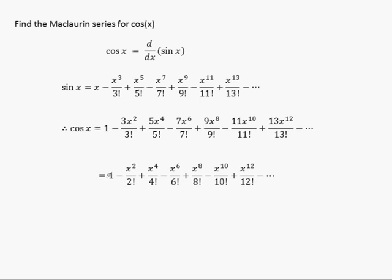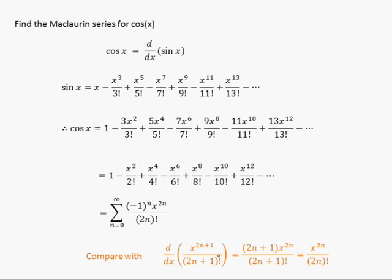Writing it in sigma notation, we've got all the even terms and we start with one instead of x. Starting with n equals zero, x to the zero is one, negative one to the zero is one, and zero factorial is one, so the first term is one. Putting in n equals one, two, three, four, we get the even powers, the even factorials, and the sign alternates positive, negative, positive, negative. You could also verify this by taking the derivative of the general term inside the sigma directly, and you'll see that it works out as well.